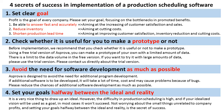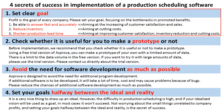Let me introduce four secrets of success in implementation of production scheduling software. Secret 1: Set clear goals. Profit is the goal of every company. Please set your goal focusing on the bottlenecks in promoted benefits.